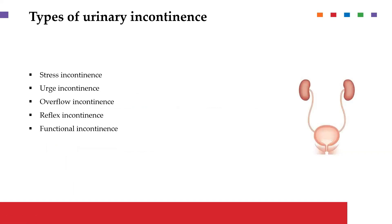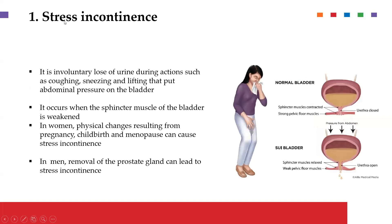To classify incontinence in a way that makes it easy to understand, we can group it into stress incontinence, urge incontinence, overflow incontinence, reflex incontinence, and functional incontinence. Starting with stress incontinence — as the name suggests, we are putting stress or pressure on the bladder.